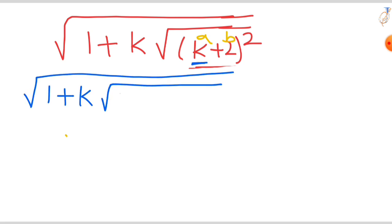1 plus k. A square means k square plus b square, that is 4, plus 2ab, that is 2. A means k, b means 2, that means 4k.